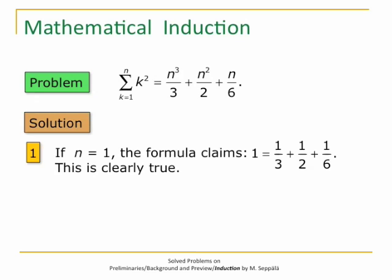First we have to check that the formula holds for the first value of the parameter. The first value of N that comes into question is 1. If N equals 1, then the left-hand side is summation k from 1 to 1 of k squared, and that is just 1 squared, which is 1. The right-hand side is 1 third plus 1 half plus 1 over 6, which adds up to 1 also. So if N equals 1, the formula claims that 1 equals 1, and this is clearly true.